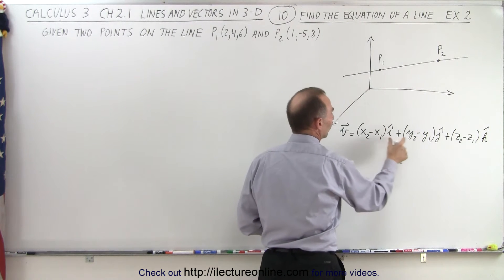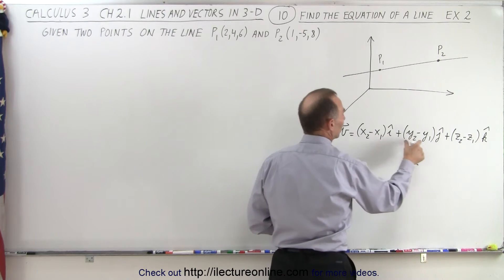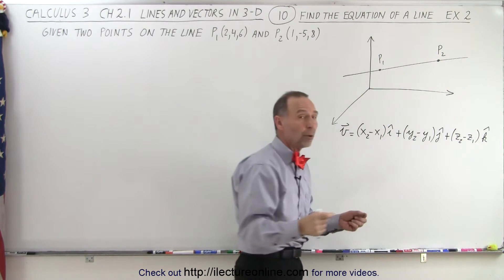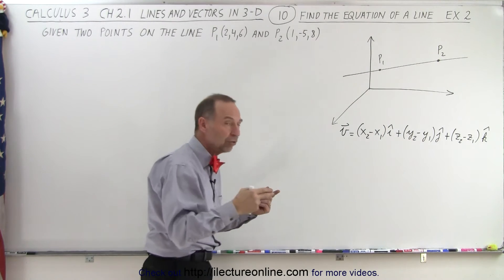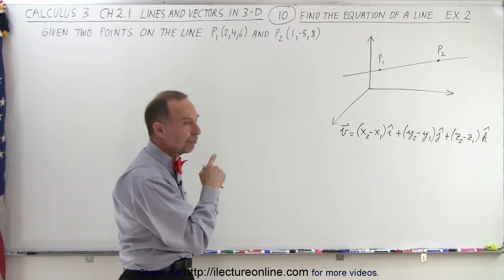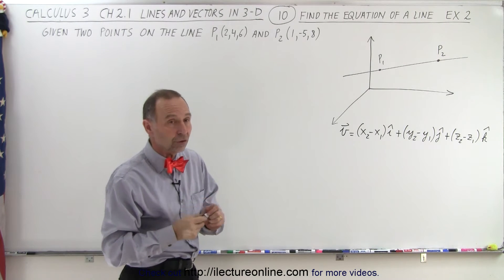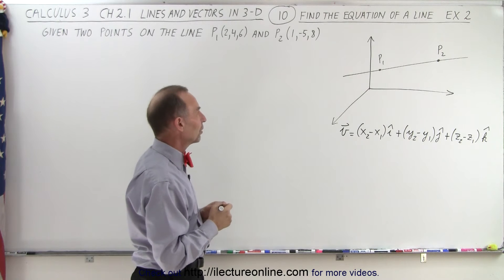So notice, we take the difference of the coordinates in the x direction, in the y direction, in the z direction of the two points, and make those the length of the components of the parallel vector, because we know that the ratios have to be the same. That's why we can do that.